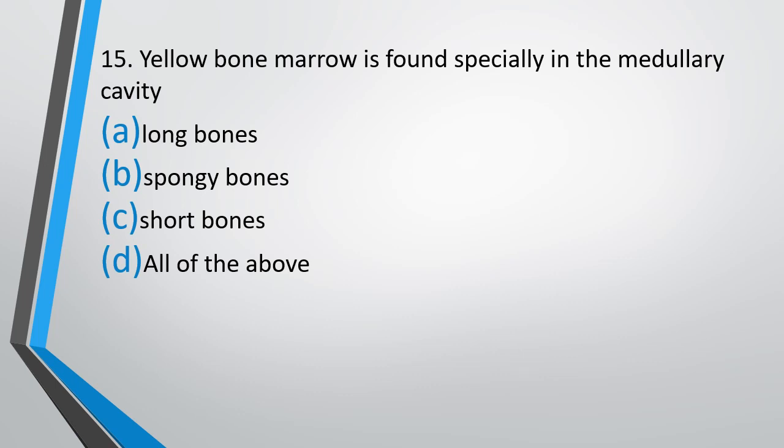Question number 15. Yellow bone marrow is found especially in: the medullary cavity of long bones, spongy bones, short bones, or all of the above? Yellow bone marrow is found specially in the medullary cavity of? The correct answer is option A, that is long bones.